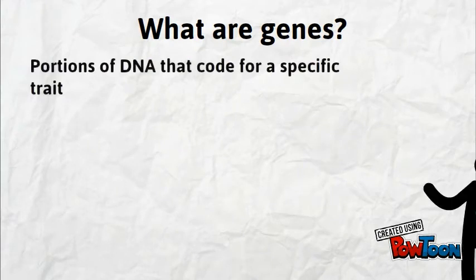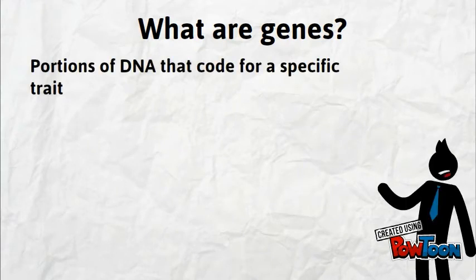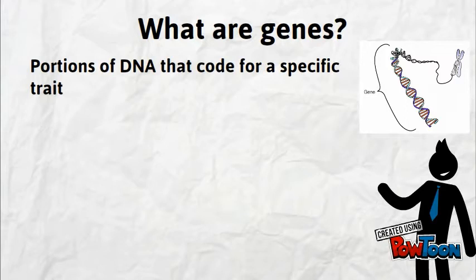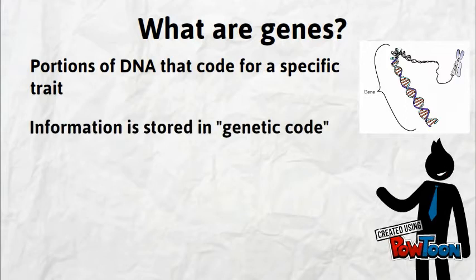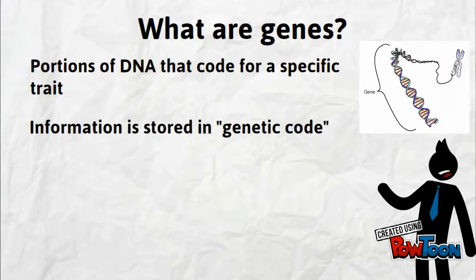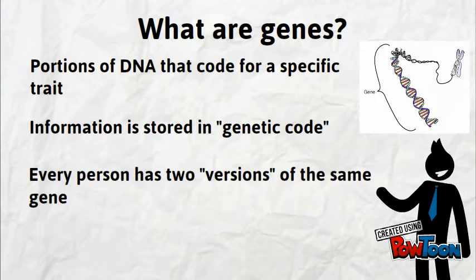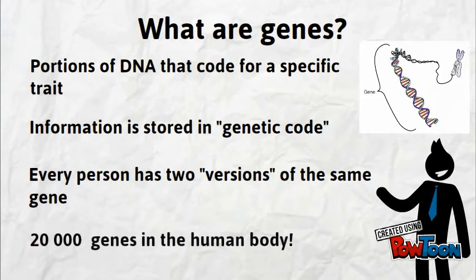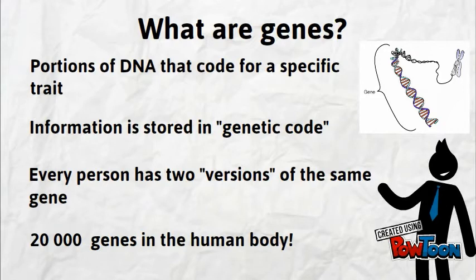What are genes? Genes are small portions of DNA that code for a specific trait, such as eye color. The language in which this code is written is called the genetic code. Genes are passed down from parents to children, and that is why there are similarities between the two. There are around 20,000 genes defining the human body.